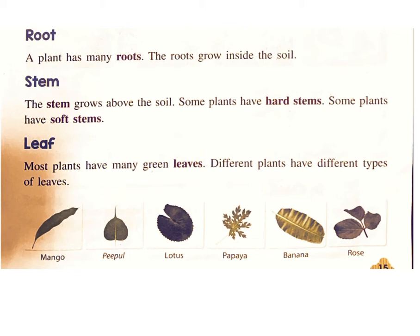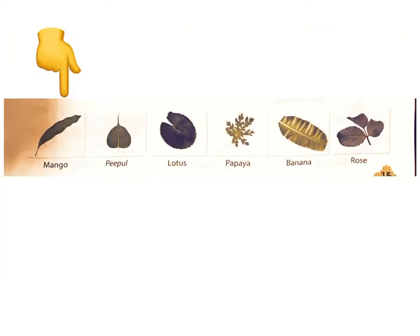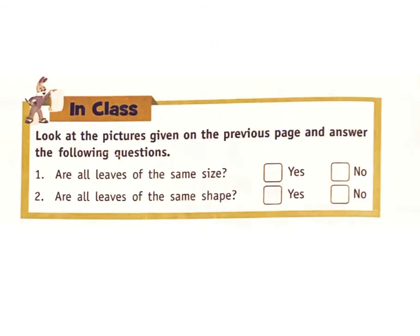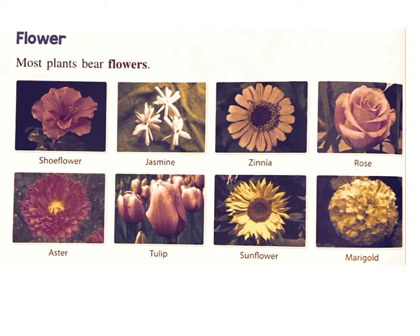Leaf: Most plants have many green leaves. Different plants have different types of leaves — mango, peepal, lotus, papaya, banana, rose. In class, look at the pictures on the previous page and answer: Are all leaves of the same size? Answer: No. Are all leaves of the same shape? Answer: No.